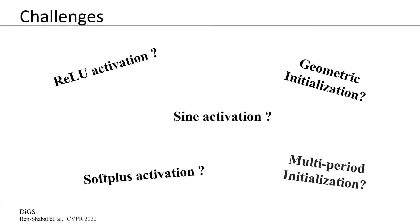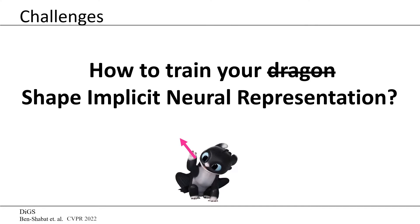In this work, we focus on the recently proposed SIREN's sinusoidal activation function networks. We show that with a different choice of initialization and loss function, performance can be improved even when normal vectors are not available. So how can we train the SIREN without normal vectors?